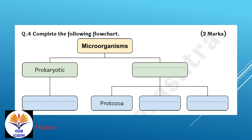Microorganisms are prokaryotic. Prokaryotes include Monera. Eukaryotes include Protozoa, Fungi, and Plants.